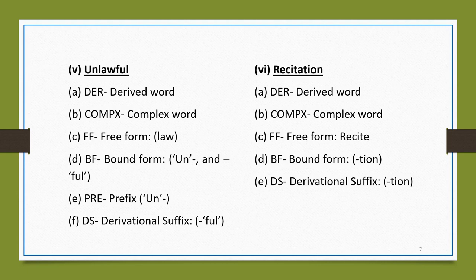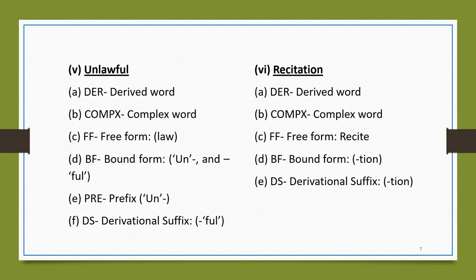The next word is 'recitation.' It is a derived word and a complex word. The free form is 'recite' — for example, reciting a poem or reciting holy verses. The bound form is the suffix 'tion.' There is no prefix here; you have only a suffix. 'Re' is not a prefix here because 'recite' is a complete word. The derivational suffix is 'tion,' because 'recite' is a verb and 'recitation' is a noun — he does recitation of the holy Quran every day.